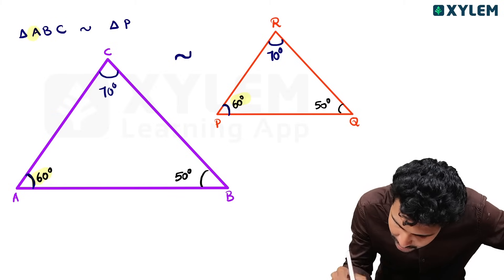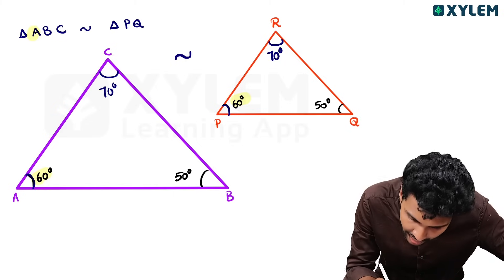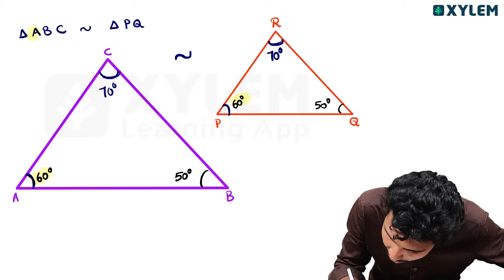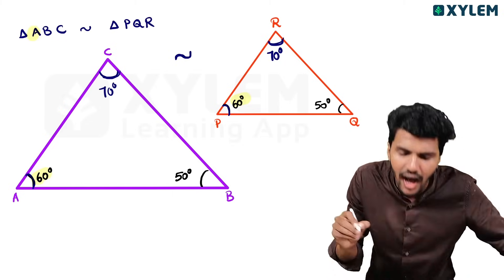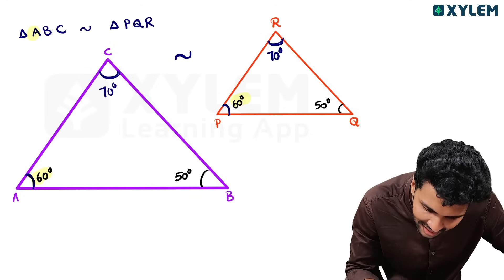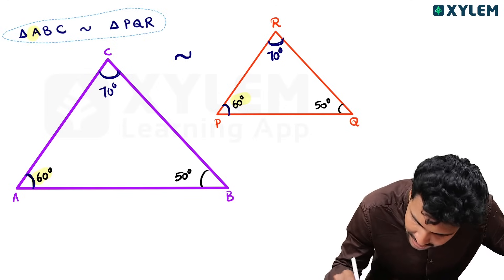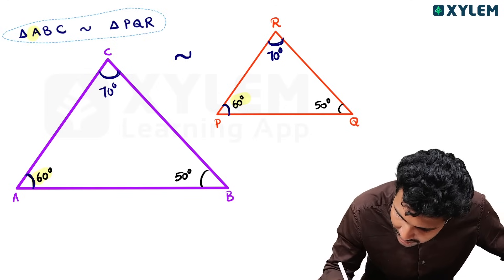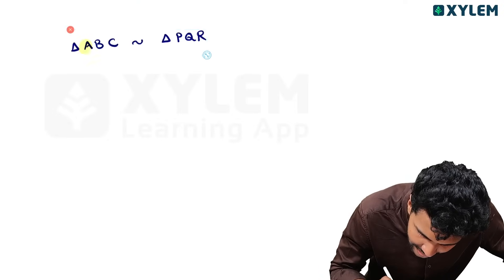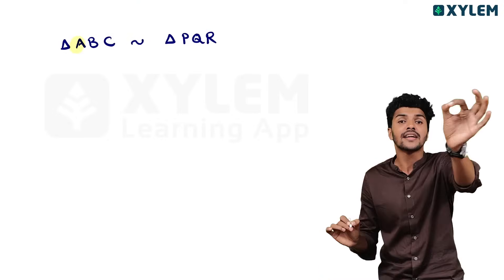50 degrees is angle B, and 50 degrees is angle Q. 70 degrees is angle C and 70 degrees is angle R. So triangle ABC is similar to triangle PQR. This is a very simple thing — we just have to write it.